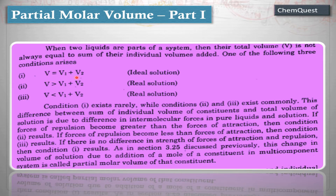We can understand this with a very simple example. For example, volume V₁ was 2 ml and volume V₂ was 3 ml. When we add two and three, we get 5 ml.